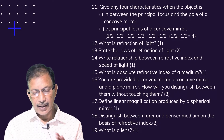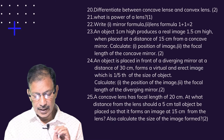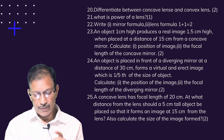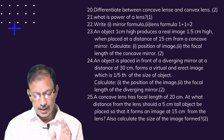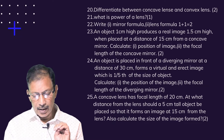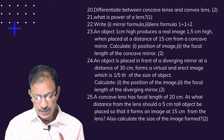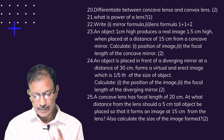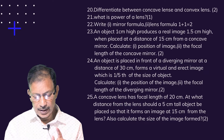What is a lens? Differentiate between concave lens and convex lens. What is the power of a lens? Write the mirror formula and lens formula. An object 1 centimeter high produces a real image 1.5 centimeters high when placed at a distance of 15 centimeters from a concave mirror — calculate the position of the image.